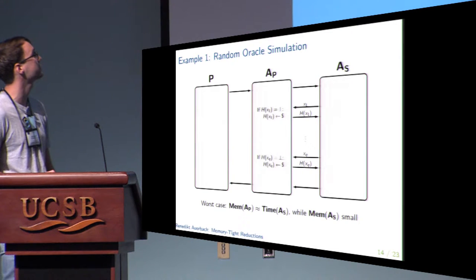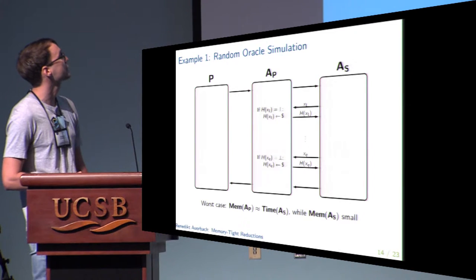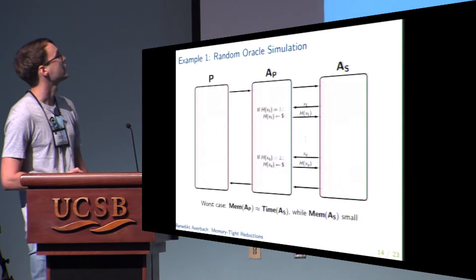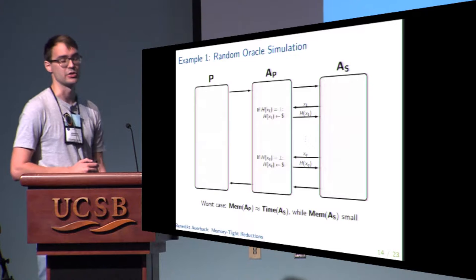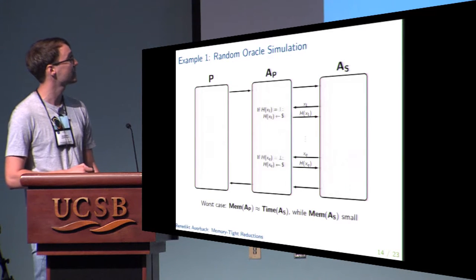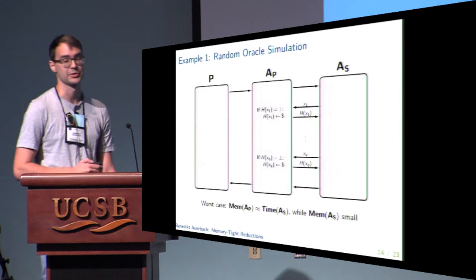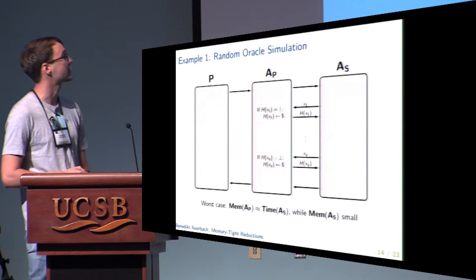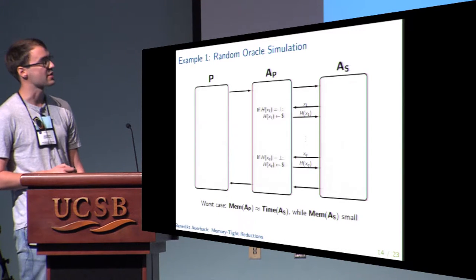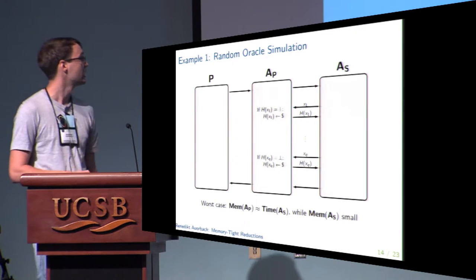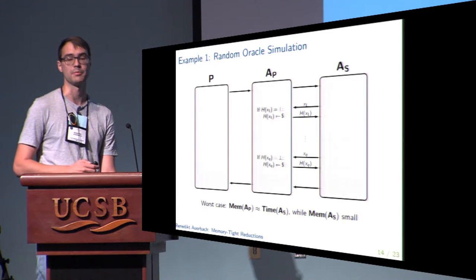Lazy sampling is done by keeping track of a list of query-answer pairs. Whenever the adversary queries the oracle on some point, we check whether this value has already been defined; if not, we sample a fresh random bit string, store it, and return the answer. We have to store the answers since the adversary might query the oracle several times on the same point. In the worst case, an adversary that essentially does nothing but query its random oracle forces the reduction to provide additional memory of the order of the running time of the underlying adversary.